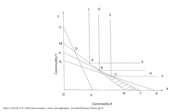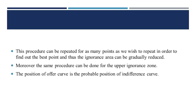The logic behind this is that the consumer has made certain choices indicating a preference for bundle B over any bundle in the NBT area, and there is no longer any uncertainty or ignorance about the consumer's ranking in this specific region. This procedure can be repeated for as many points as needed to find the optimal point, and accordingly the ignorance zone can be reduced further.